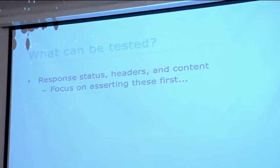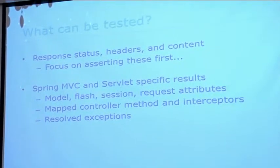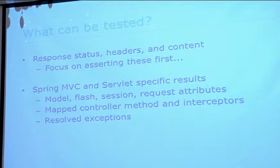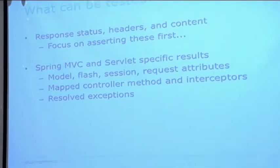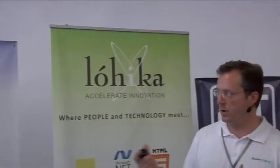What can be tested? Response status — like HTTP 200 — headers that were returned, and the content. Focus on asserting these first since that's what gets sent back to the user. You can also test Spring MVC-specific results: the Spring MVC model, flash scope, session scope, request attributes, mapped controller methods and interceptors, and verify whether exceptions are properly resolved based on your configuration. There are also various options for asserting the response body using JSON path, XPath, and custom Hamcrest matchers.